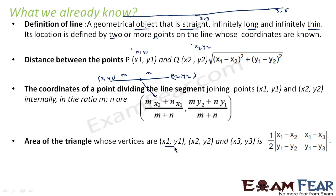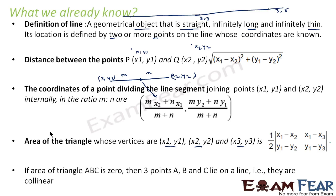If we have a triangle whose vertices have coordinates (x1, y1), (x2, y2), and (x3, y3), the area is: (1/2) × |determinant of (x1−x2, x1−x3; y1−y2, y1−y3)|. Also, if the area of triangle ABC is zero, that means all three points A, B, C lie on a single line — they are collinear.